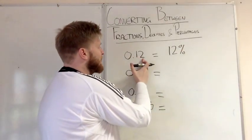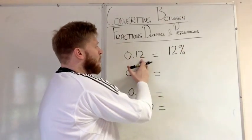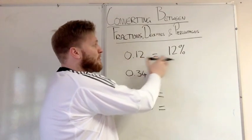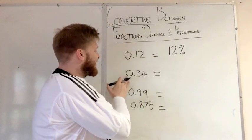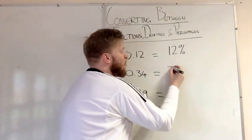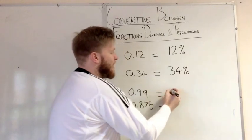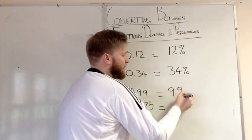Simple thing, 0.12 equals 12%. So your first two decimal places, your tenths and your hundredths, that is your tens and your units for your percentage. So it works exactly the same here, 0.34 would equal 34%. 0.99 would equal 99%.